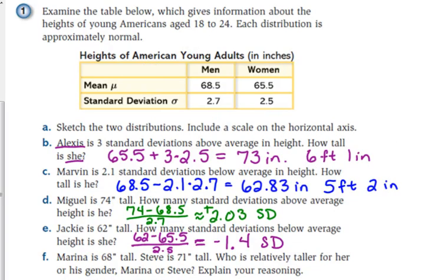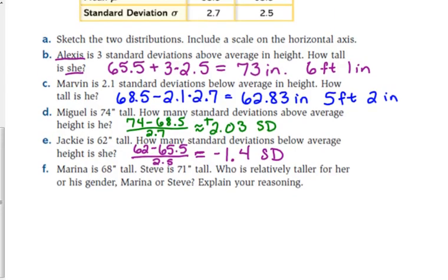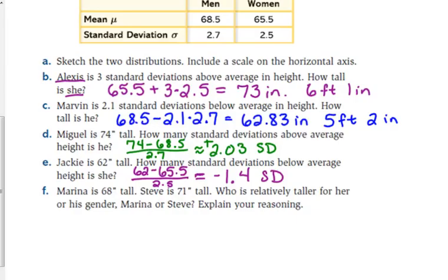So last question here, and I will let you guys go. They tell us Marina is 68 inches tall. Steve is 71 inches tall. Who is relatively taller for his or her gender? They are both above average for their gender. Obviously, Steve is taller, but when we compare them to other males and females, who is taller compared to them? Y'all crunch the numbers and tell me which one it is.